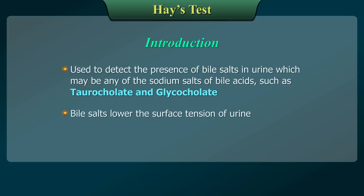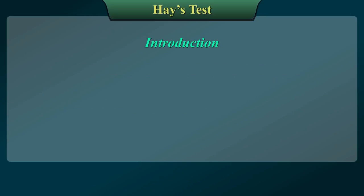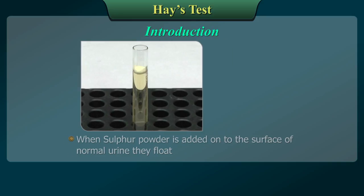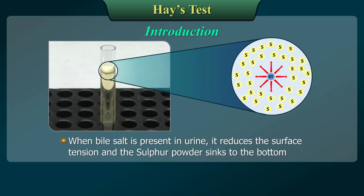Bile salts lower the surface tension of urine. When sulphur powder is added onto the surface of normal urine, the particles float. When bile salts are present in urine, they reduce the surface tension and the sulphur powder sinks to the bottom.